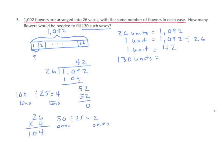Now I need not 1 unit, but 130 of the same size units. I can use a tape diagram once again. I don't know the whole — I need to find out what 130 units is. I do know what 1 unit is: 42. I can model that: 1 unit is 42, label 1, 2, ellipsis, and 130. This tells me I have 42 repeated 130 times — I have the part 42, and I need to find the whole. This represents 130 times 42.